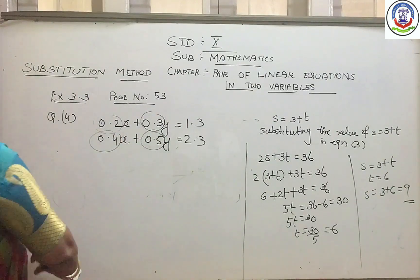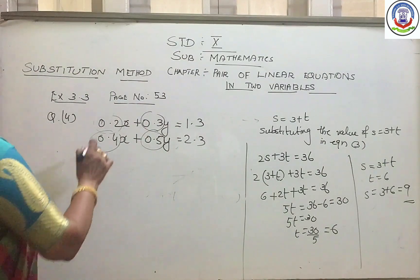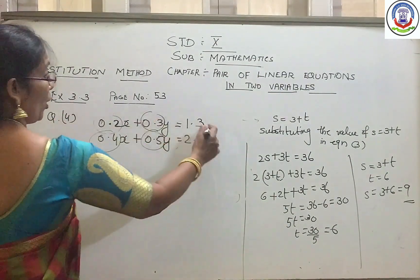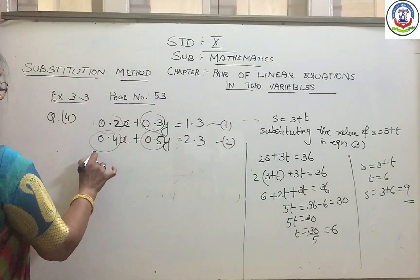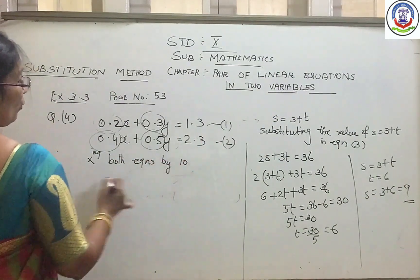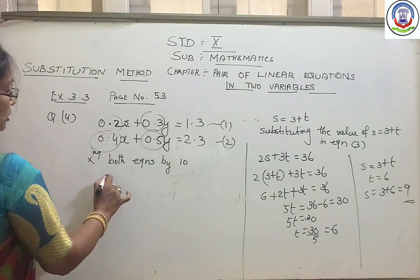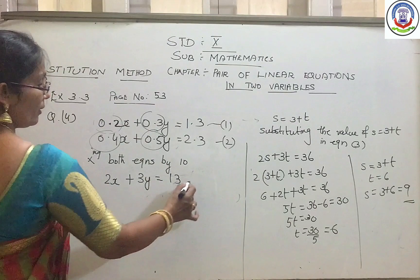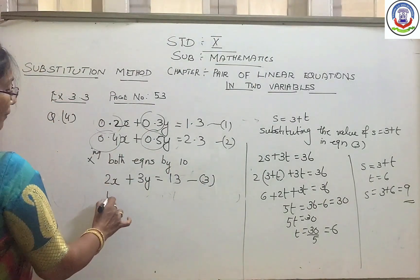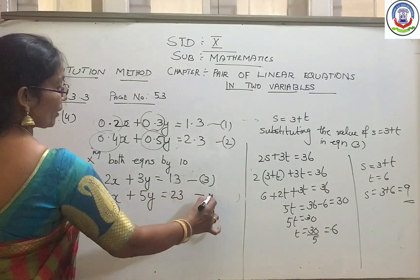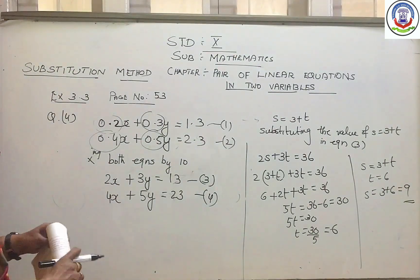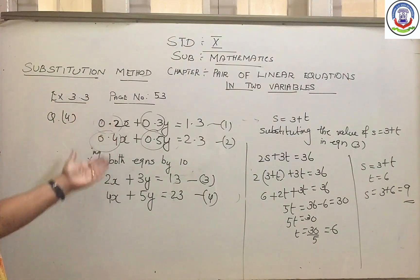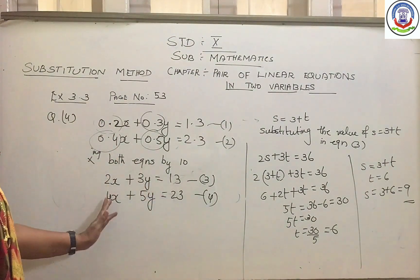The problem is that the coefficients are decimals, but there is no need to worry. You just multiply both equations throughout by 10, because after the decimal point there is only one place. Multiplying both equations by 10: 0.2x becomes 2x, 0.3y becomes 3y, and 1.3 becomes 13. The other equation gives 4x plus 5y equal to 23. So in integer form: 2x plus 3y equal to 13, and 4x plus 5y equal to 23.